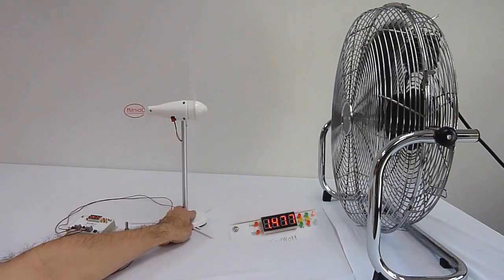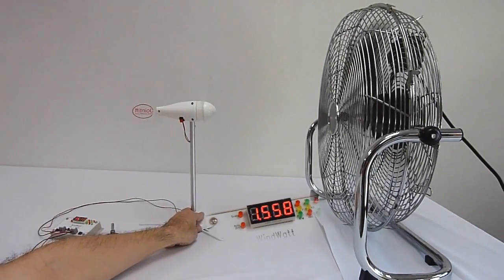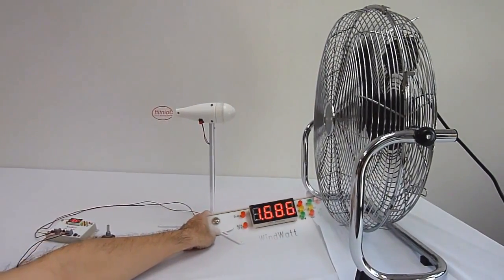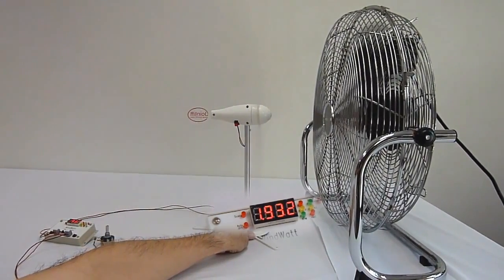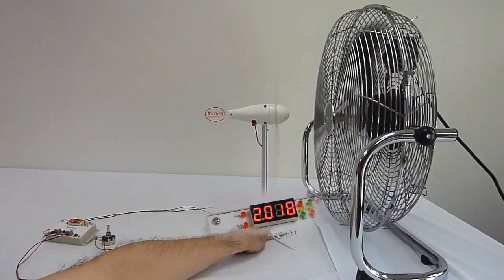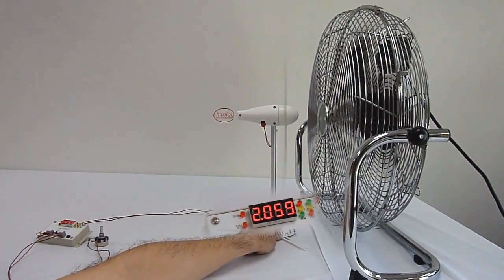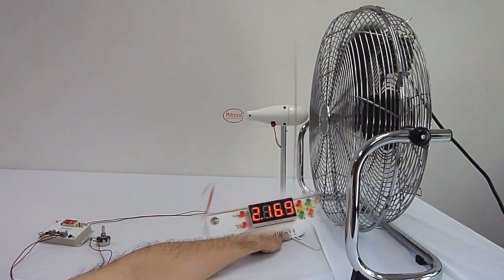Then we want to increase the wind speed by moving towards the wind source. You may note that the power increases quickly as the turbine moves towards the fan. The highest power we can harvest from this fan is 2.228W.